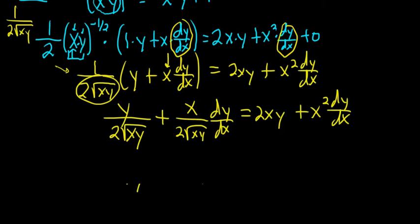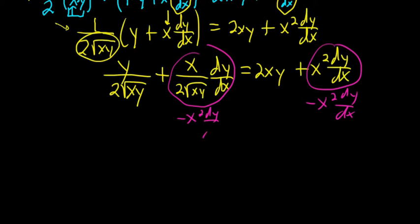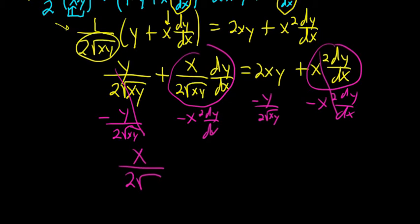Okay, we're looking for dy/dx. So now what we're going to do is get everything that has a dy/dx on one side by itself. So this term and this term are going to be on the left-hand side. So minus x squared dy/dx, and then I'll subtract this one, minus y over 2 square root xy. So these cancel, these cancel. We're left with minus x over 2 square root xy dy/dx minus x squared dy/dx.